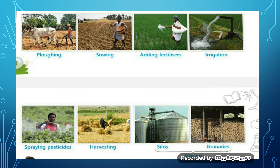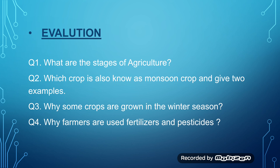I hope this process is very clear to you. Come to the next slide. Here I am giving you some questions related to all these topics. Question one: What are the stages of agriculture? Question two: Which crop is also known as monsoon crop? Give two examples. Question three: Why are some crops grown in the winter season? Question four: Why do farmers use fertilizers and pesticides? I think you can easily do all these questions. Do all the questions and answers in your HW science copy. You should revise all the topics again — part 1, part 2, and part 3. Revise again all the topics and study well at home. Thank you.